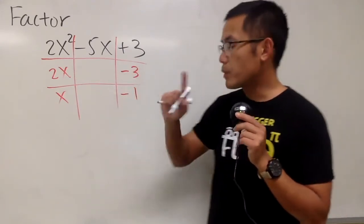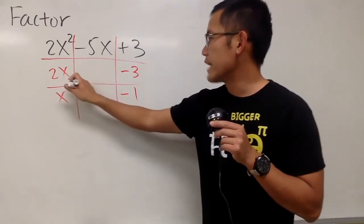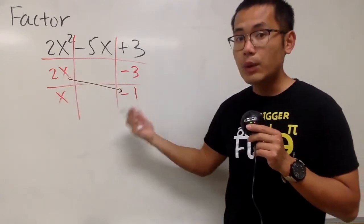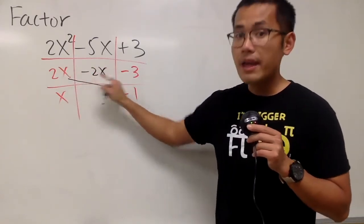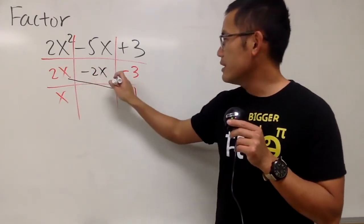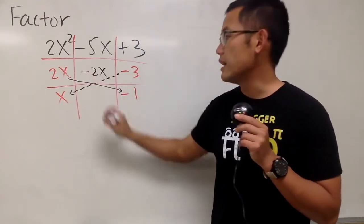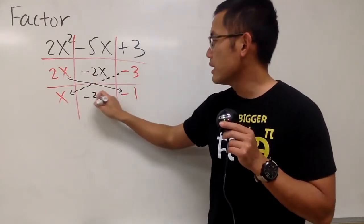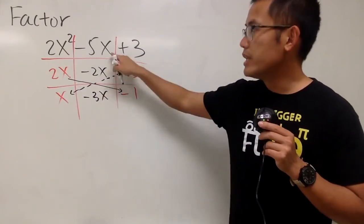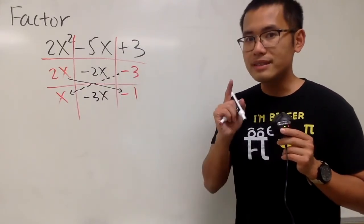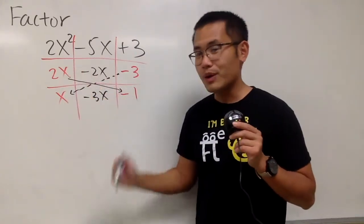The reason is because, when we do the check, we take 2x times negative 1, which gives us negative 2x. And then negative 3 times x gives us negative 3x. Combined, do we get negative 5x? Yes, we do. Therefore, this is our correct combination.